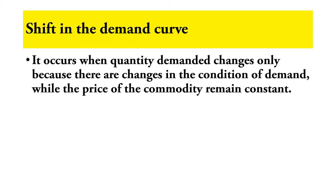The next important point is shift in the demand curve. It occurs when the quantity demanded changes only because there is a change in the conditions of demand, while the price of the commodity remains constant. The quantity demanded changes because of other factors, and the demand curve can either shift to the right or to the left depending on the change in conditions.